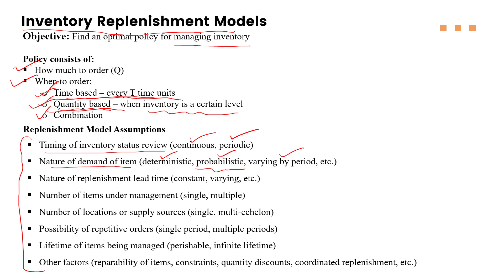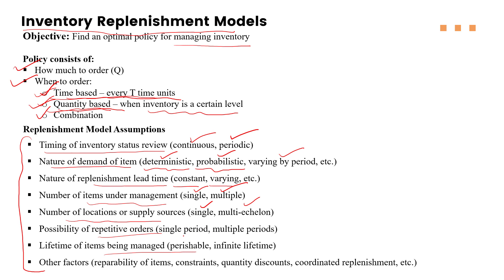We also have stochastic and deterministic inventory models. Another important factor is the replenishment lead time — the time between ordering and receiving. Whether that lead time is constant, varying with demand, or stochastic matters. Similarly, the number of items under management — whether we manage a single product or multi-product inventory — is important. In a supply chain, the number of locations matters too, whether inventory is held at a single location or multiple locations. The possibility of repetitive orders and factors like quantity discounts are also relevant characteristics for selecting a specific inventory model.